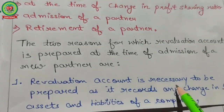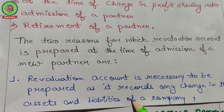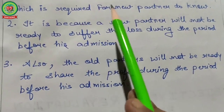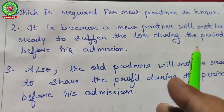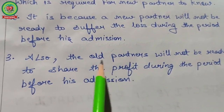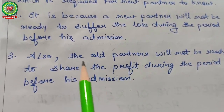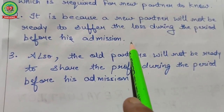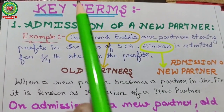The two reasons for which the revaluation account is prepared at the time of admission of a new partner: number one, it records any change in the value of assets or liabilities. Number two, a new partner will not be ready to suffer any loss during the period before his admission. Equally, the old partners will not be ready to share any profit earned before the admission of the new partner.